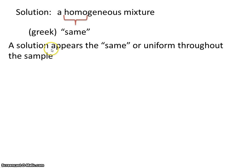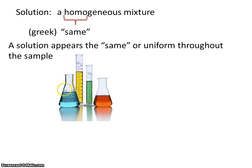A solution appears the same or uniform throughout the sample. That means anywhere you look at the sample, it should look the same as if you look to a different place within the sample. For instance, if you look at the bottom here, that should look the same as the top. Similarly, anywhere you look in this column, it's uniform or the same.